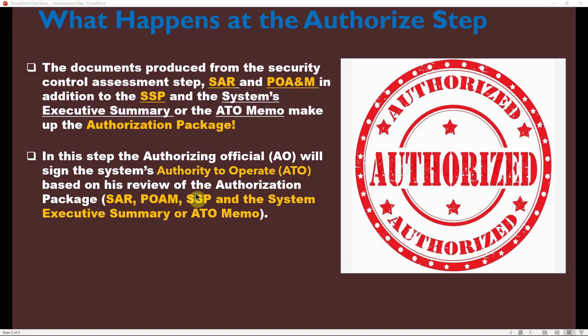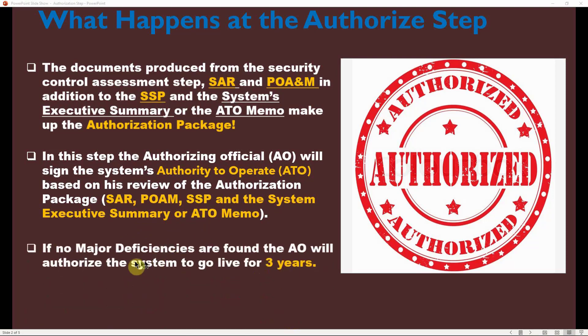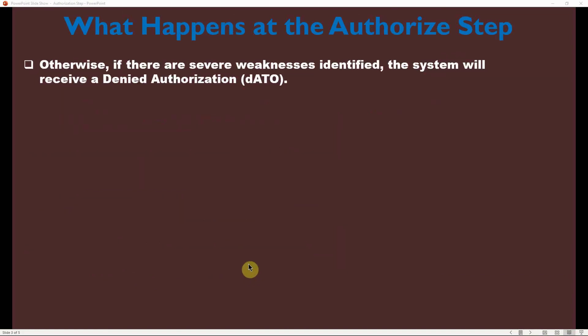In this step, the Authorizing Official (AO) will sign the system's Authority to Operate (ATO) based on its review of the authorization package — that is the SAR, the POA&M, the SSP, and the system's executive summary or ATO memo. If no major deficiencies are found, the AO will authorize the system to go live for three years. Otherwise, if severe weaknesses are identified, the system will receive a denied ATO (DATO).